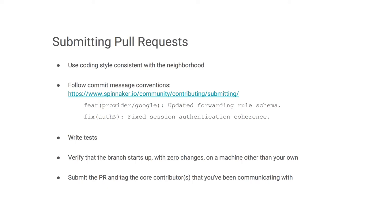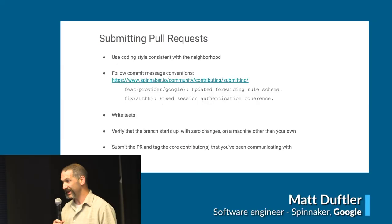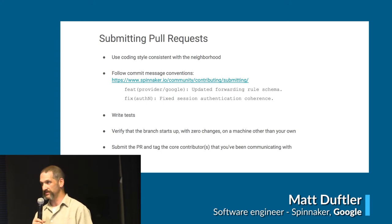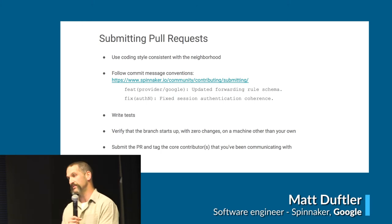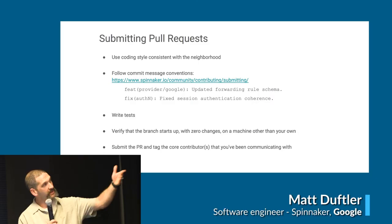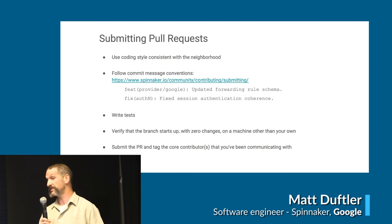Our coding style is inconsistent but consistently inconsistent - try to fit in with the neighbors. Most modules have a pretty consistent style, though it can change between modules. For commits: we have logic that scrapes commit messages and does automated changelog generation. Follow the conventions for commit messages so we don't push breaking changes labeled as patches. Follow those conventions - a couple of examples: write tests, and they should be meaningful tests.